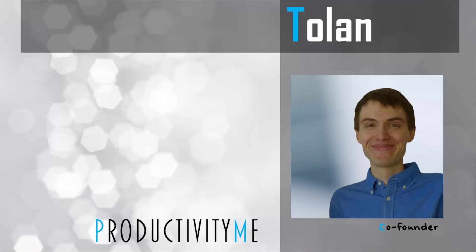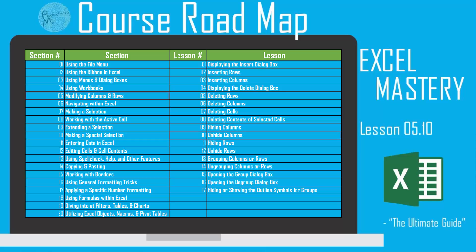Hi and welcome! My name is Tolan and I'm the co-founder of ProductivityMe. In this video we're going to look at the keyboard shortcut Ctrl+Shift+0, which will allow us to unhide specific columns within our worksheet. So with that, let's get started.